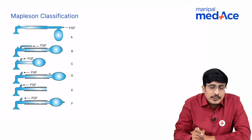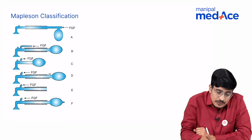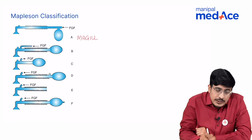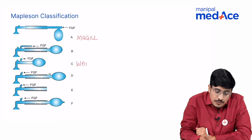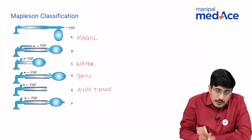Each of these circuits have got an individual name. Type A is called as Maggill circuit, type C is called as water circuit, type D is called as the Bain circuit, type E is called as the ISTP, type F is called as the Jackson-Reese circuit.